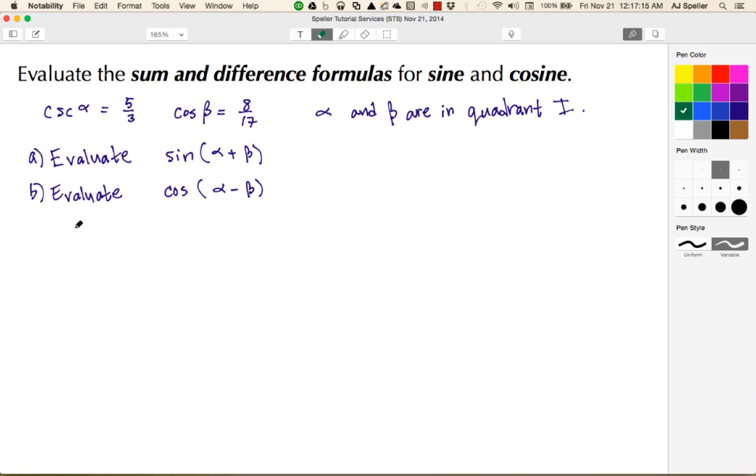The first thing we need to do is create special triangles for alpha and beta. Let's begin by constructing a special triangle for alpha. This is my right triangle with angle alpha. I know that for cosecant, the relationship is hypotenuse over opposite side, so that's 5 over 3. We need to figure out what the adjacent side is.